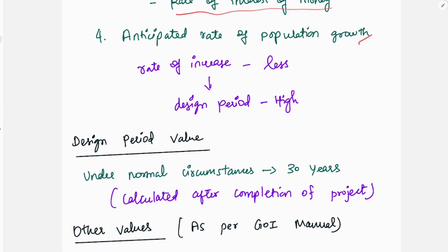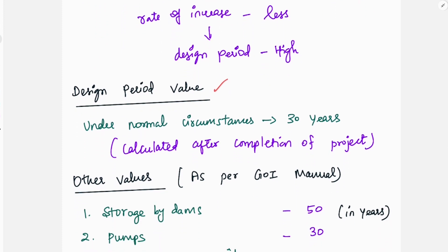What is the value of the design period? Under normal circumstances, calculated after completion of project, 30 years. When we complete the project, we have to hand over to a user department. We have to fix the design period for 30 years.